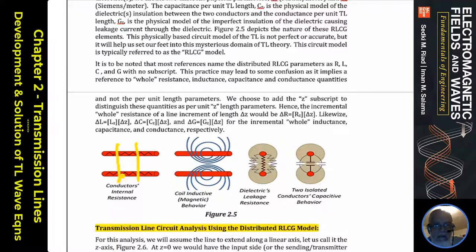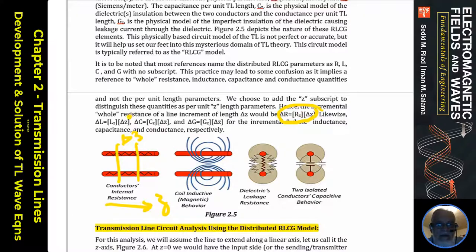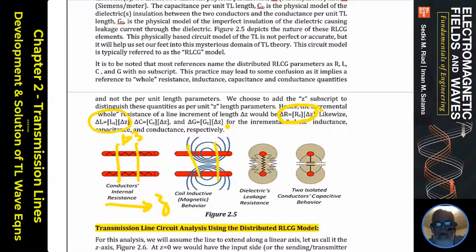If we take an increment of the transmission line — a delta z along the z-axis — there will be a delta R in that segment equal to R_z times delta z, where R_z is the resistance per unit length. Similarly, delta L equals L_z times delta z, delta C equals C_z times delta z. So R_z, L_z, C_z, and G_z are the per-unit-length properties: ohms per meter, henrys per meter, farads per meter, and siemens per meter respectively.